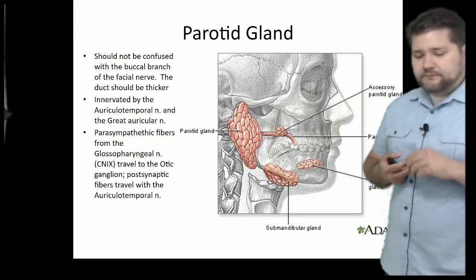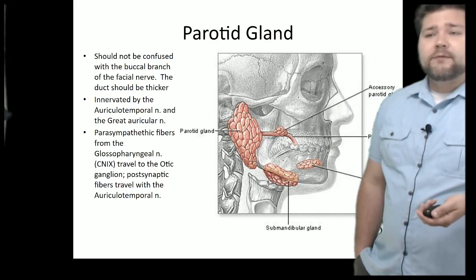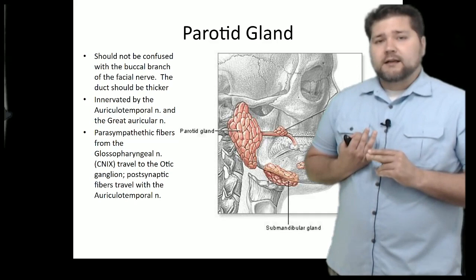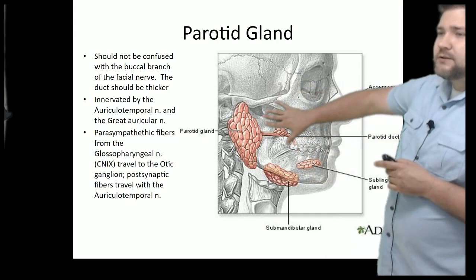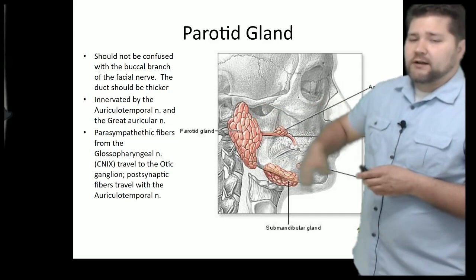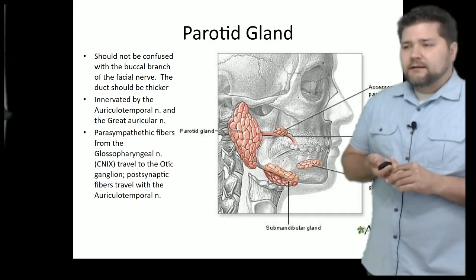Sensory innervation to the parotid gland comes from the auriculotemporal and greater auricular nerves. It also receives parasympathetic fibers from the glossopharyngeal nerve via the otic ganglion — postsynaptic parasympathetic fibers from the otic ganglion enter the parotid gland and increase salivation.